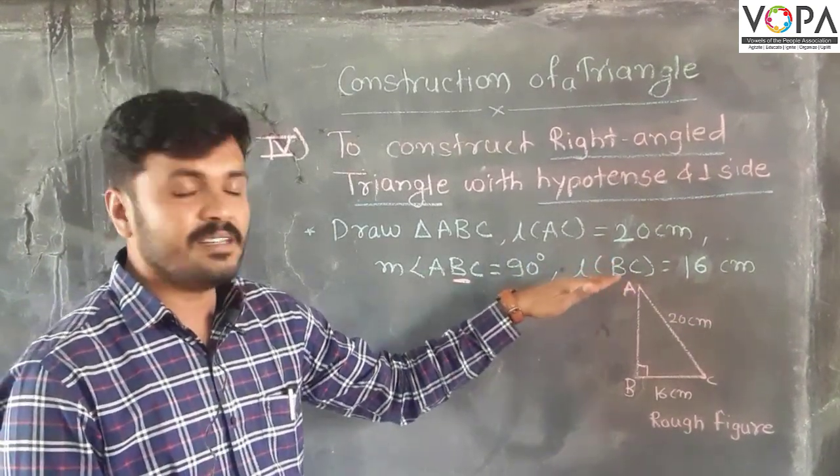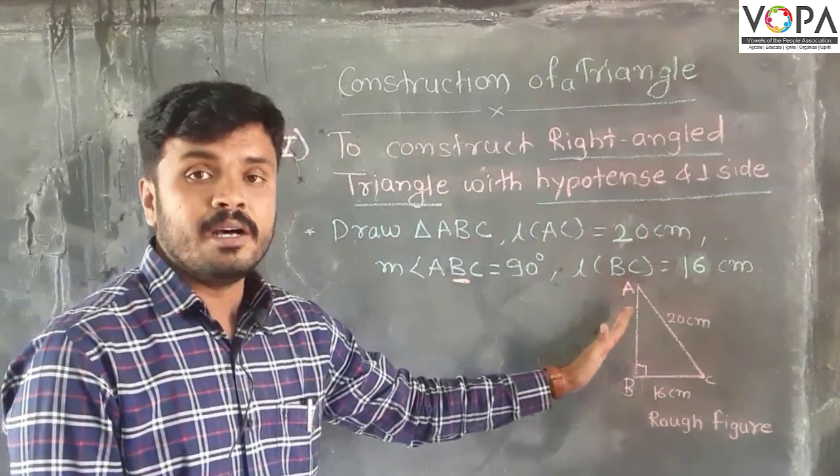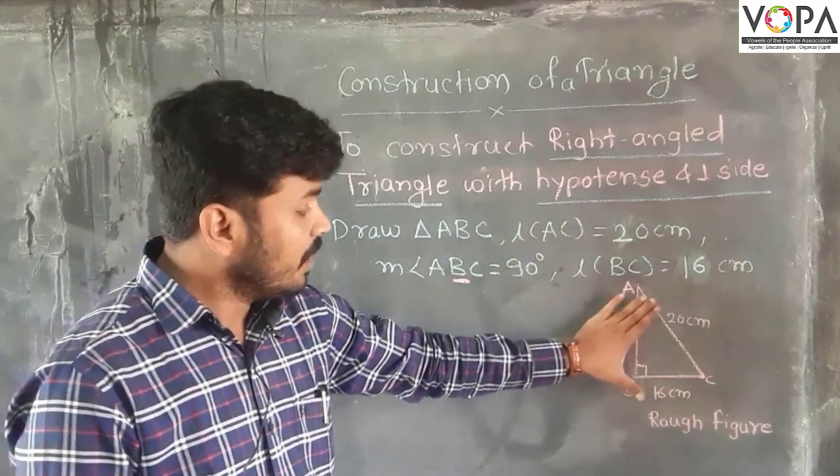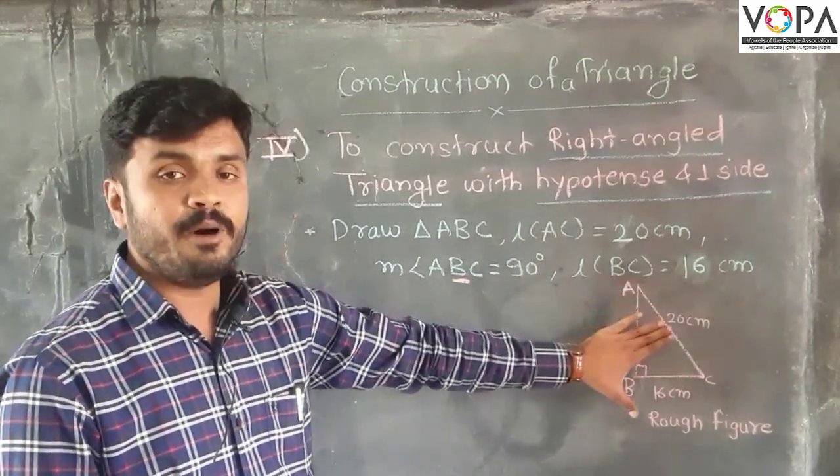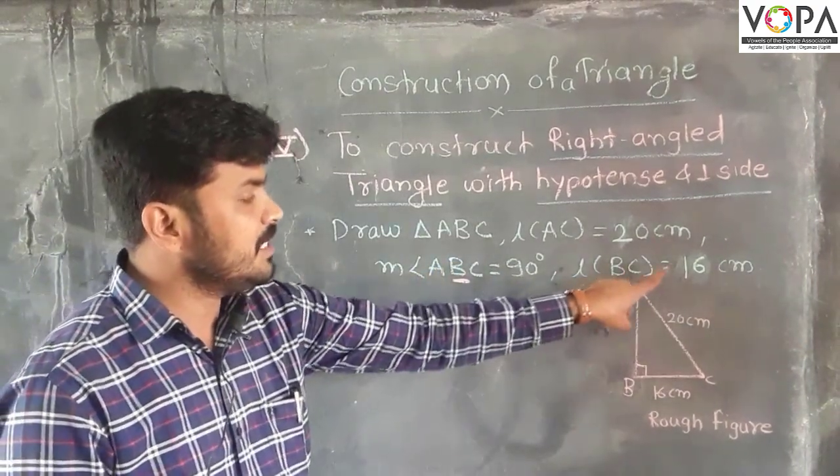Now, firstly we draw the rough figure. Let us draw the rough figure, and with the help of rough figure we can draw the main figure. So length of BC is equal to 16 centimeters, the base.